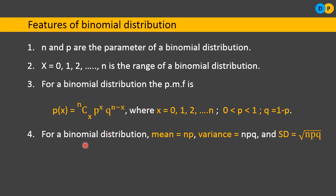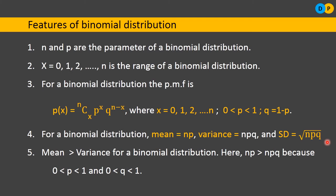Feature 4: for a binomial distribution, mean = np, variance = npq, and standard deviation = √(npq). You need to memorize these. Compare to Bernoulli distribution where mean = p, variance = pq, and standard deviation = √(pq). For binomial, n is the number of trials multiplied into each formula.